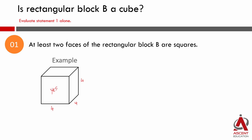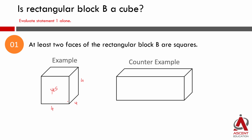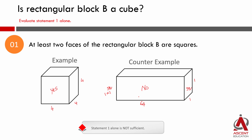Now let's try a counter-example. Suppose this measures 1 unit in width and 1 unit in height — those two opposite faces are square faces, so statement 1 holds. But if the length is 64 units, this is a 64 by 1 by 1 rectangular block, which is not a cube. So with statement 1 alone, sometimes the answer is yes and sometimes no — we are not getting a definite answer. Statement 1 is not sufficient.